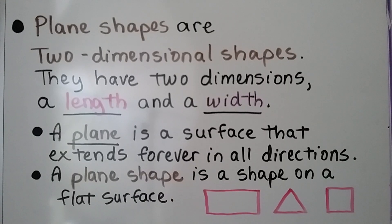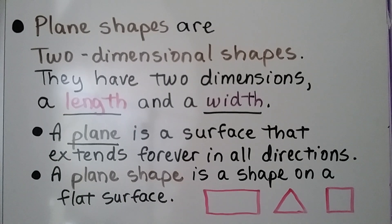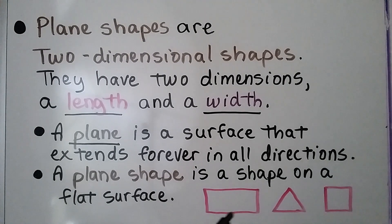Plane shapes are two-dimensional shapes. They have two dimensions: a length and a width. Length and width are dimensions. A plane is a surface that extends forever in all directions. A plane shape is a shape on a flat surface, like these drawings of shapes on my dry erase board.